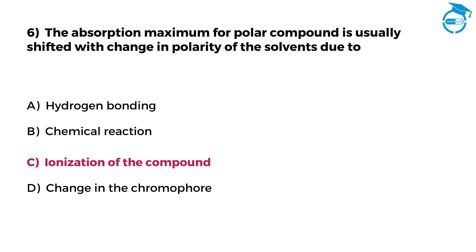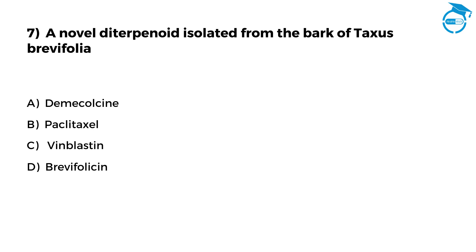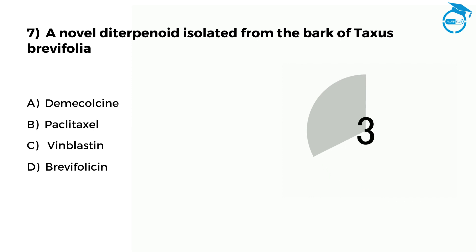Few more questions left — let's move ahead. A novel diterpenoid isolated from Taxus brevifolia. Option A: Demecolcine. Option B: Paclitaxel. Option C: Vinblastine. Option D: Brevifolin. Post your answer in comments — only 7 seconds left. The right option is B, that is Paclitaxel.